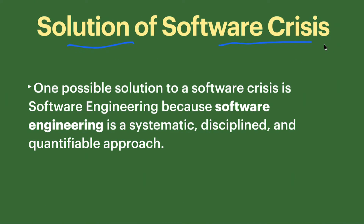Now let's look at the solution to software crisis. One possible solution is software engineering, because software engineering is a systematic, disciplined, and quantifiable approach. If the project management and the software development team follow software engineering rules and guidelines, and fulfill all the phases of software engineering, that is the solution to software crisis.